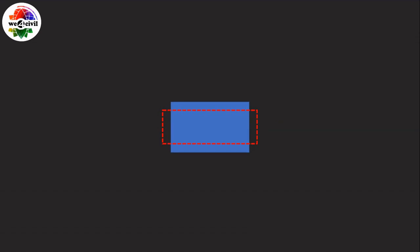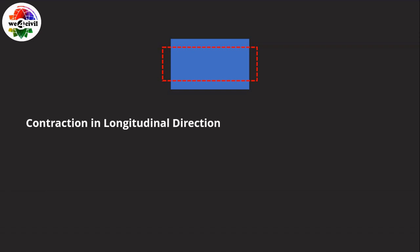In the earlier case we applied a tensile force to the bar. Now if we apply a compressive force, the size of the bar increases in the lateral direction and reduces in the longitudinal direction — contraction in the longitudinal direction and expansion in the lateral direction. Here also we can see the effect of Poisson's ratio.